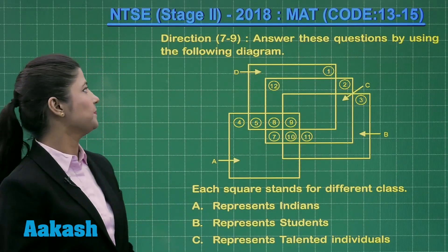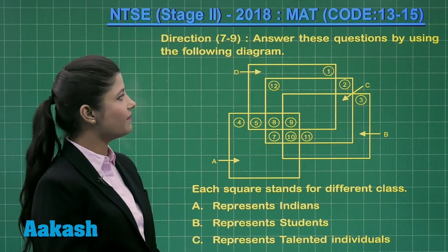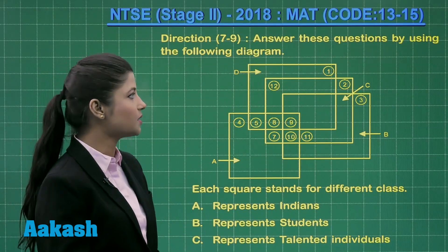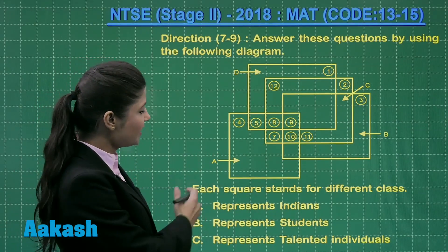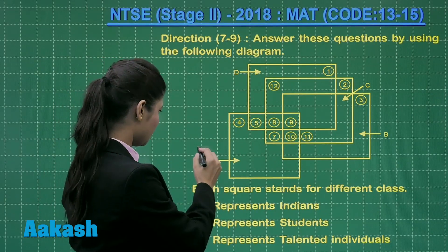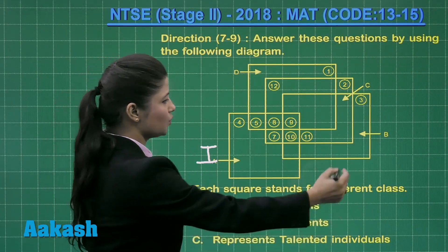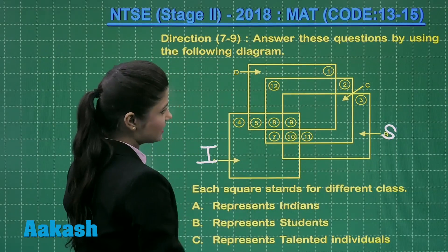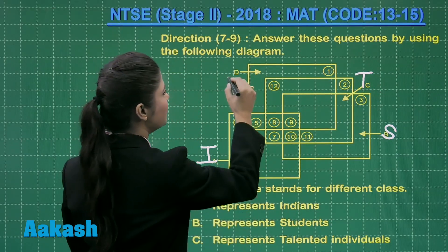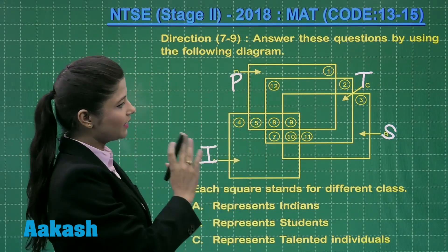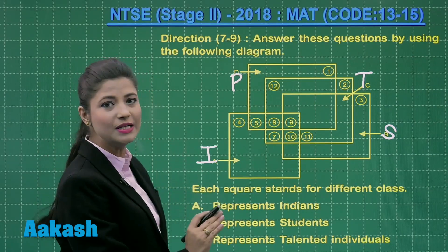Let us solve questions 7 to 9. These are linked questions and the direction for questions 7 to 9 states: answer these questions by using the following diagram. In this diagram, A represents Indians, B represents students, C represents talented individuals, and D represents the players. We have decoded this diagram and on the basis of this you will be answering questions 7 to 9.